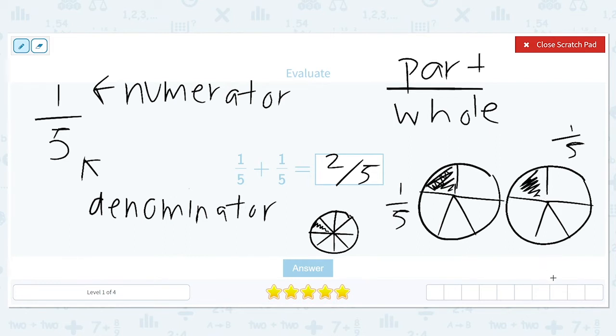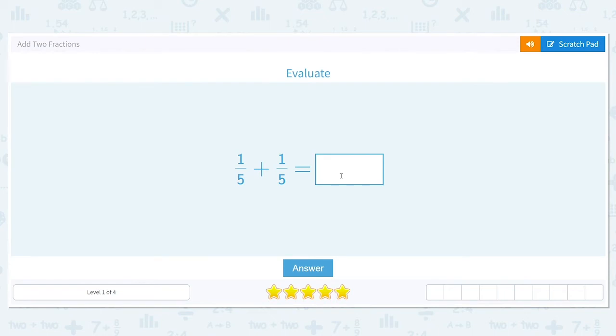If we didn't have a picture, we would just do one plus one equals two, and keep the denominator the same. So one fifth plus one fifth is going to be two fifths.